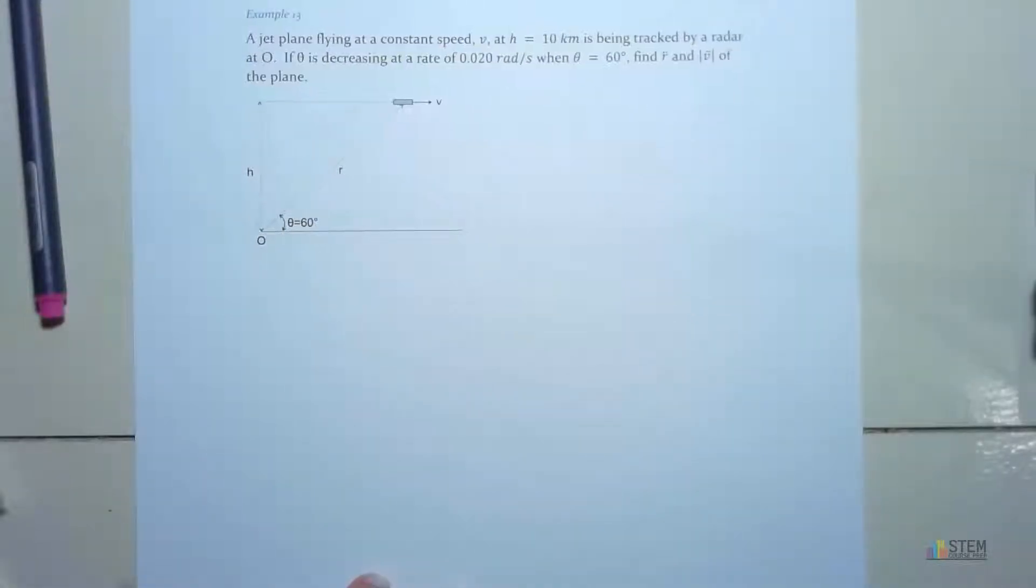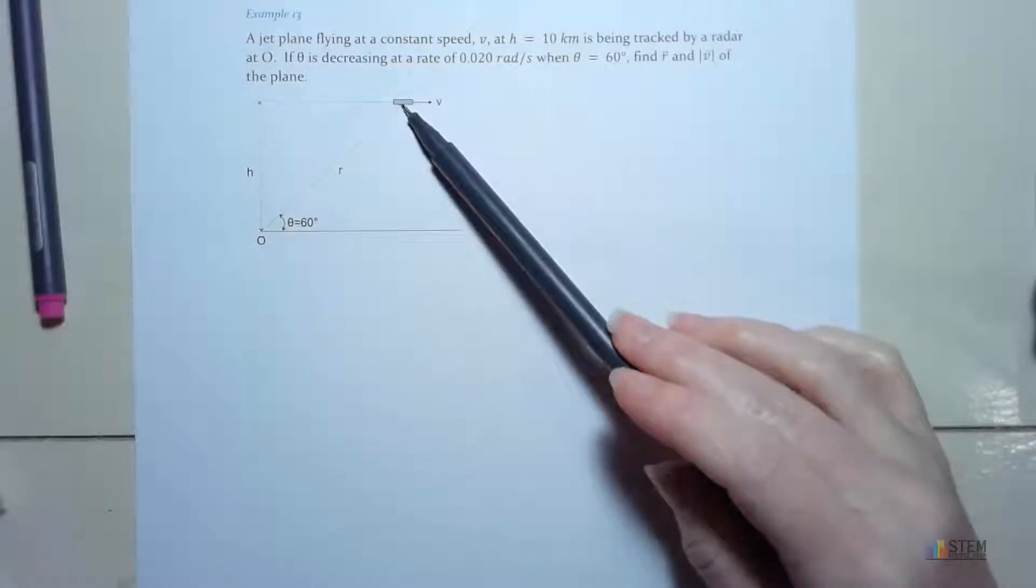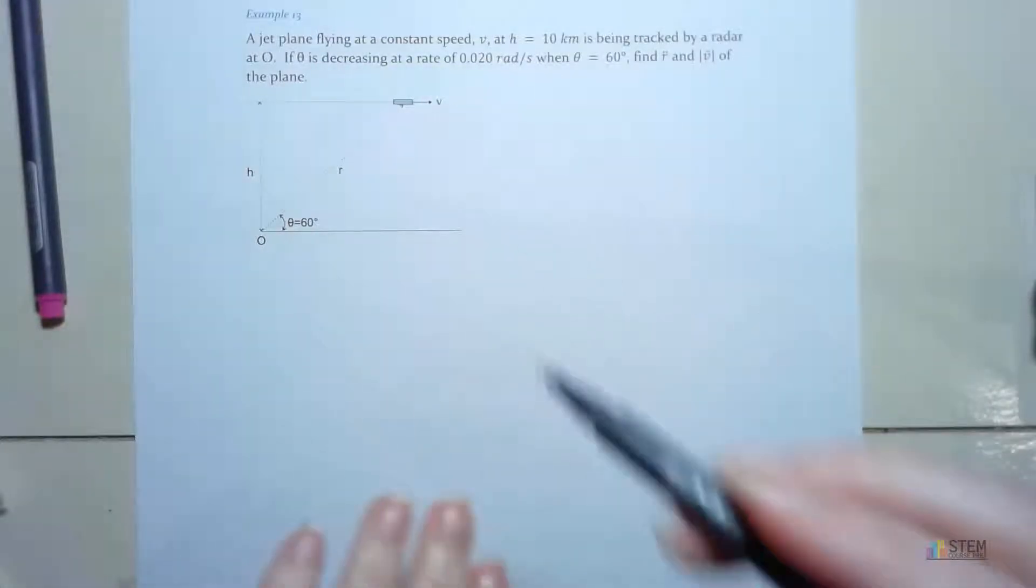Hey guys, let's do our first example for polar coordinates. What we've got here is a plane that's flying along at a constant speed.